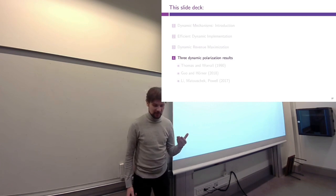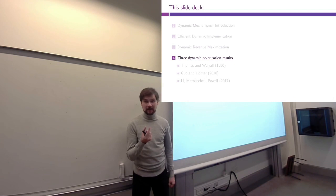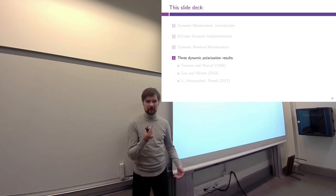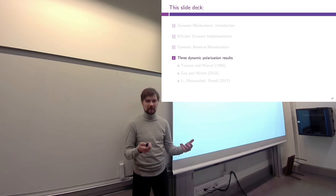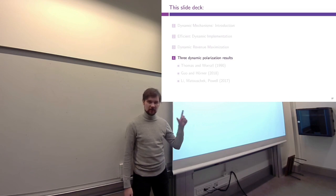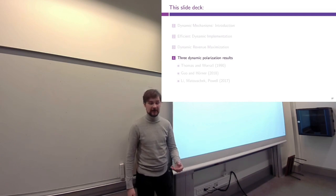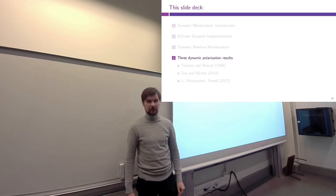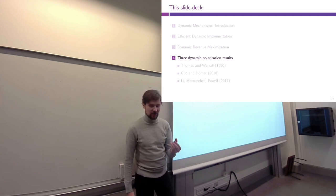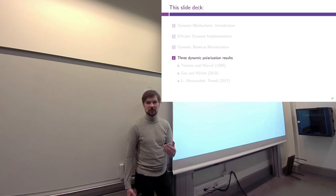You can extract future information for essentially free. To extract the initial information, as in the Myerson static mechanism, you need to distort the allocation away from the efficient one. The efficient allocation maximizes total surplus from the buyer, but you must trade off that surplus against the information rents you leave to the player. To provide incentives for truthful revelation, you must distort the allocation to some extent. In dynamic optimal mechanisms, extracting initial information requires distorting the allocation in the first period at least.